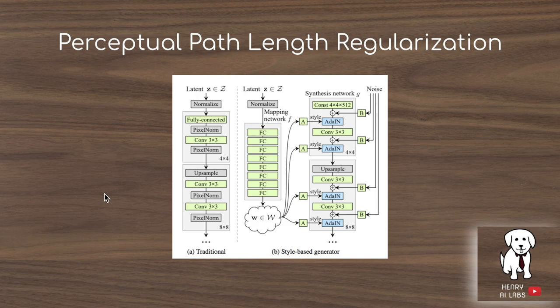The next technical change is to add perceptual path length regularization to the loss function of the generator. The high-level idea is to have changes in the latent vector Z not result in too dramatic changes in the generated image. So if you slightly change this latent vector Z, you want it to be a smooth change in the semantics of the generated image, rather than having a completely different image generated with respect to a small change in Z.